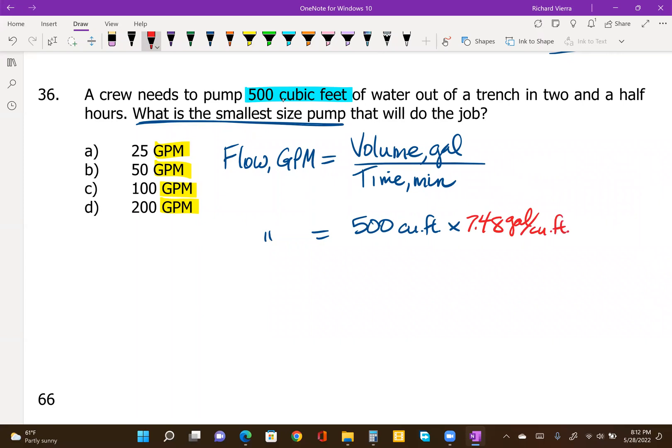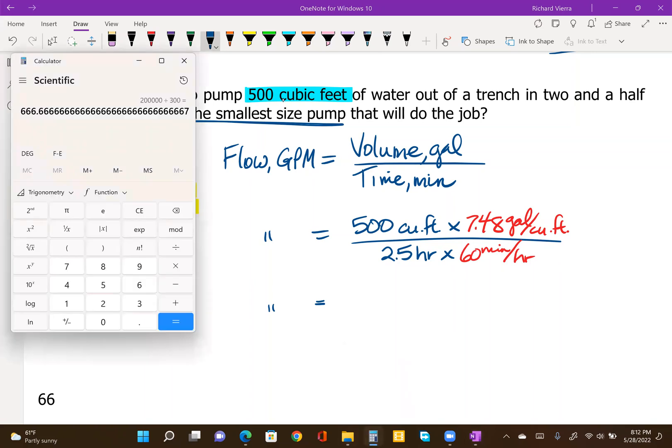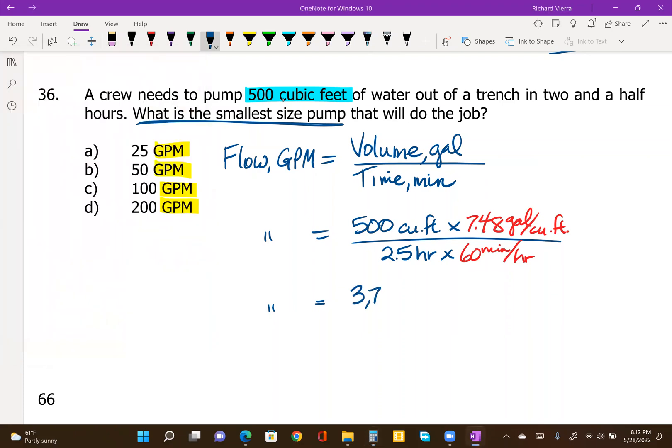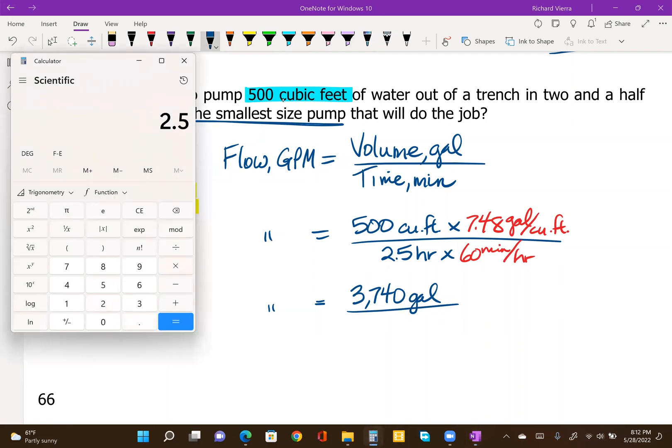And similar to the last example, we have our time period that they're wanting to have this done within given in hours. So we're going to multiply that number times the 60 minutes per hour. So let's go ahead and figure out how many gallons, how many minutes. 500 times 7.48 comes out to 3,740 gallons. So we have to pump a total of 3,740 gallons out of this trench in two and a half hours. So 2.5 times 60, which comes out as 150 minutes.